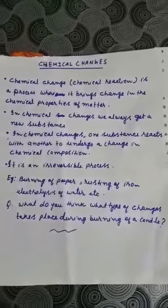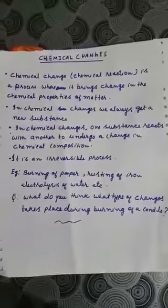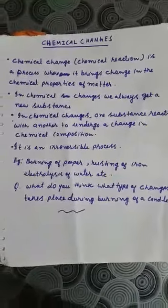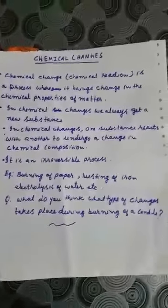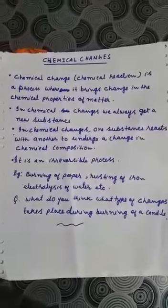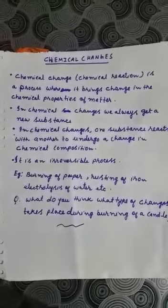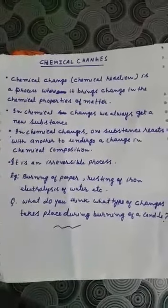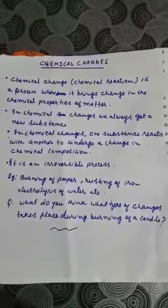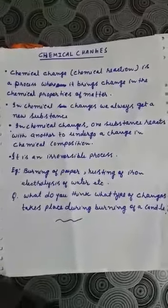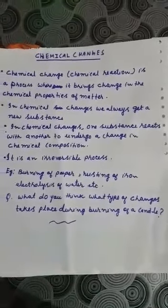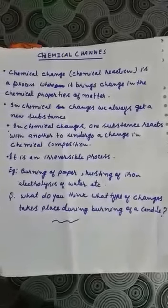If we burn paper, it burns in the presence of oxygen and gives us the ashes of the paper. Rusting of iron: iron reacts with moisture present in the atmosphere and forms a brown, flaky, powdery substance. Previously there was one substance and after the chemical reaction you get another substance.